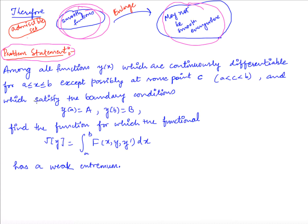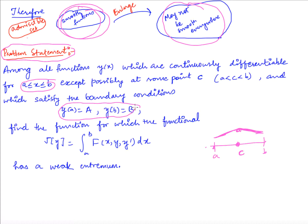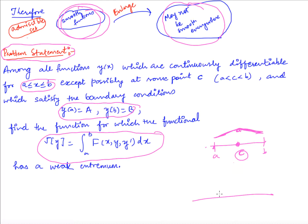We are going to enlarge our admissible set from smooth functions to functions that may not be smooth everywhere. We have fixed endpoints a and b with a point c in between. Among all functions y that are continuously differentiable on [a,c] and [c,b] — satisfying the boundary conditions — we want to find the extremal of the functional. This can be generalized to multiple corner points c₁, c₂, c₃, and so on.